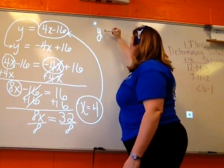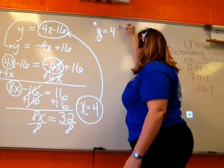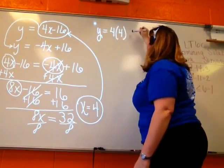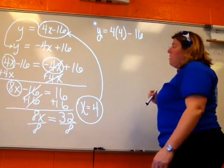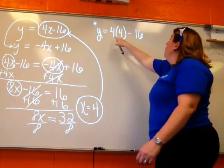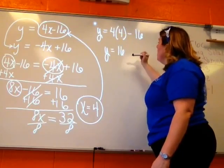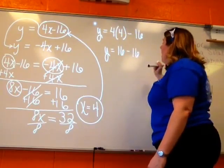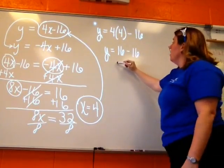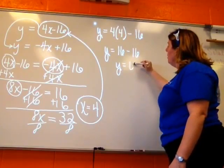So I'm going to take Y is equal to 4 times 4 minus 16. So 4 times 4, so Y is equal to 4 times 4, which happens to be 16. And 16 minus 16 is 0. So Y is equal to 0.